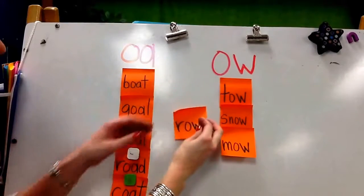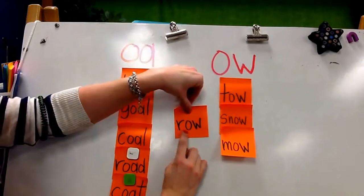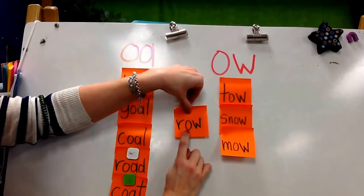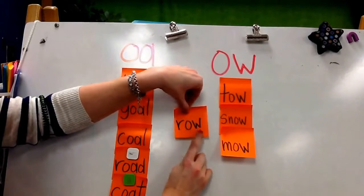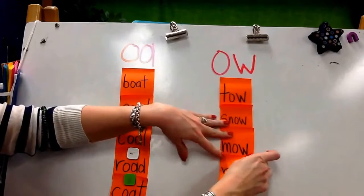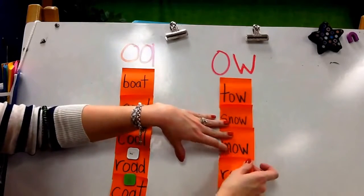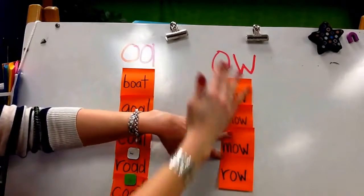And here's my last word: row. When I see OW, I'm going to read it as O — row. So I'm going to put that under OW.